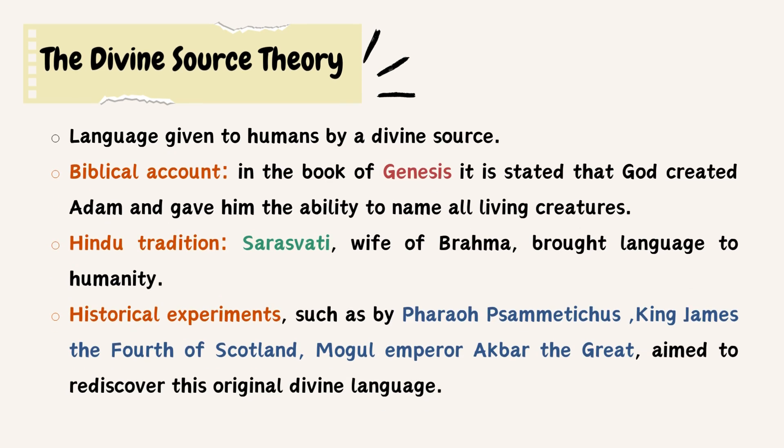One of the oldest theories is the Divine Source Theory, which suggests that language was a gift from a divine entity. According to the biblical account in the Book of Genesis, God created Adam and gave him the ability to name all living creatures. A similar concept exists in Islam, where Allah taught Adam the names of all things. In Hindu tradition, Saraswati, wife of Brahma, brought language to humanity. Throughout history, rulers like Pharaoh Psammetichus, King James IV of Scotland, and Mughal Emperor Akbar the Great all conducted experiments to rediscover this original divine language.